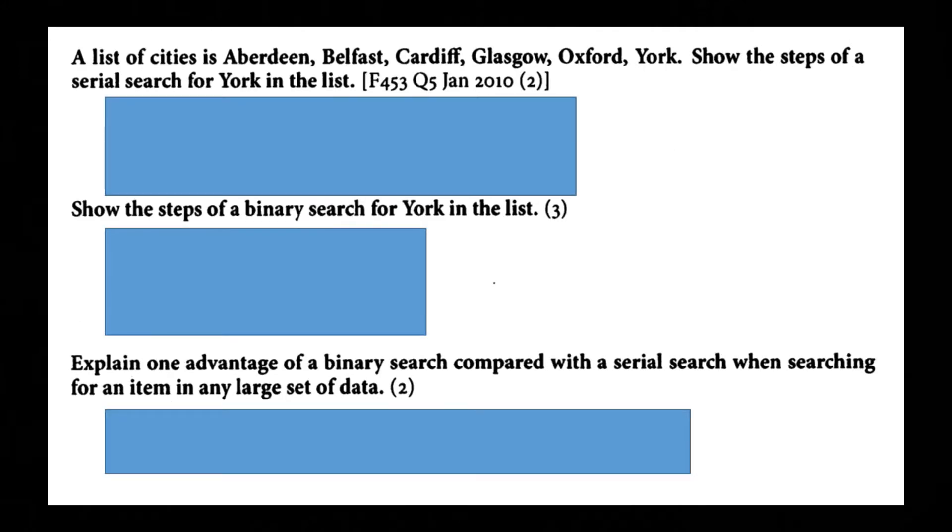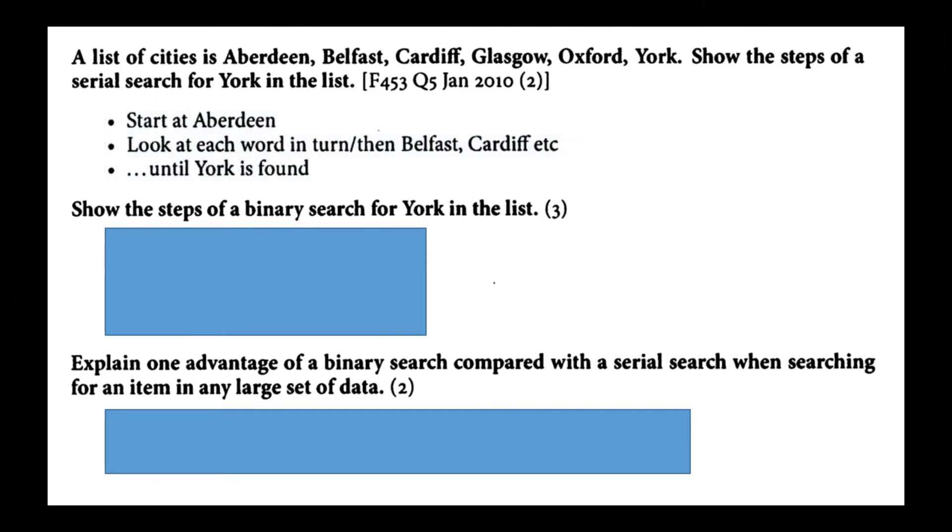A list of cities Aberdeen, Belfast, Cardiff, Glasgow, Oxford and York. Show the steps of a serial search for York in the list. So it would be when it compares each one. So start at Aberdeen. Look at each word in turn. Then Belfast. Then Cardiff. Look at each word in turn. Look at Belfast. Look at Cardiff. Look at Glasgow. Look at Oxford. Look at York. Until York is found.